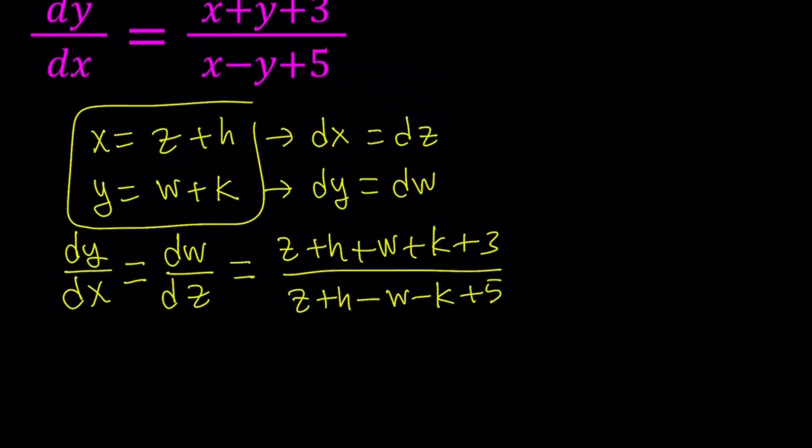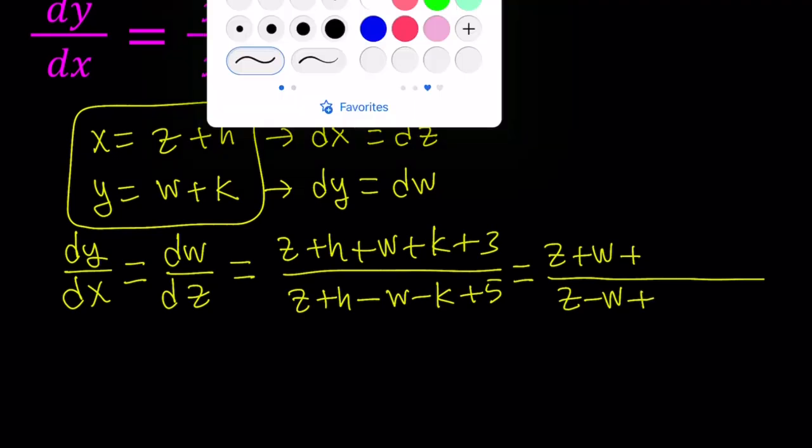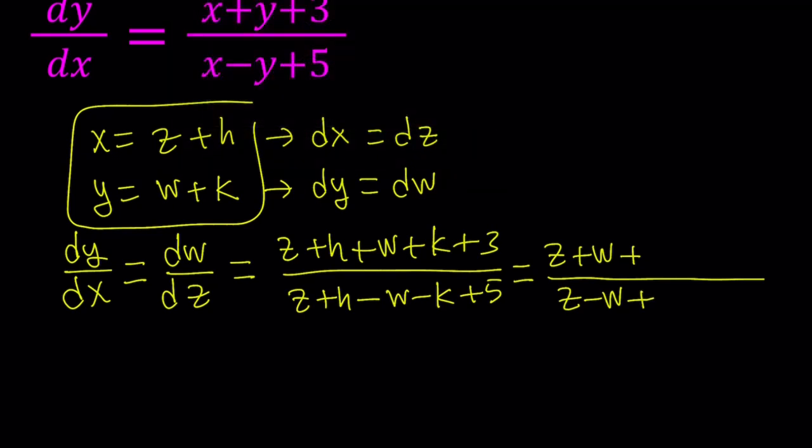Now, here's one thing I want you to notice. We can kind of arrange these terms a little bit, and put the z and w together. And let me go ahead and write those first, because I'm going to change the color here. And then plus, and I think this is going to be a plus 2. And now, let's go ahead and write the constants together, like h plus k plus 3, and h minus k plus 5. Awesome.